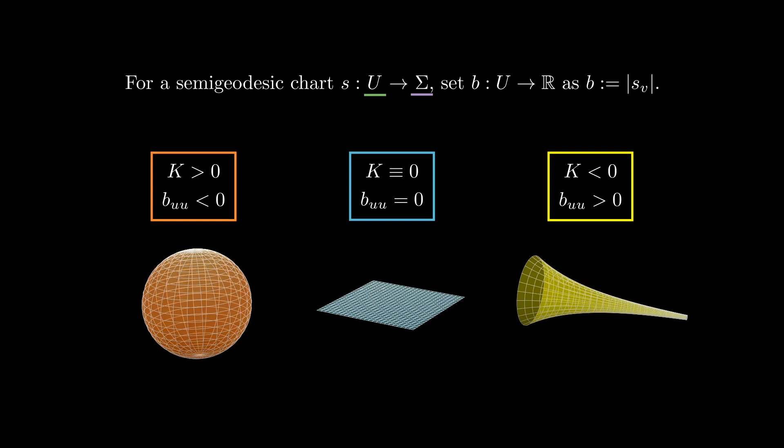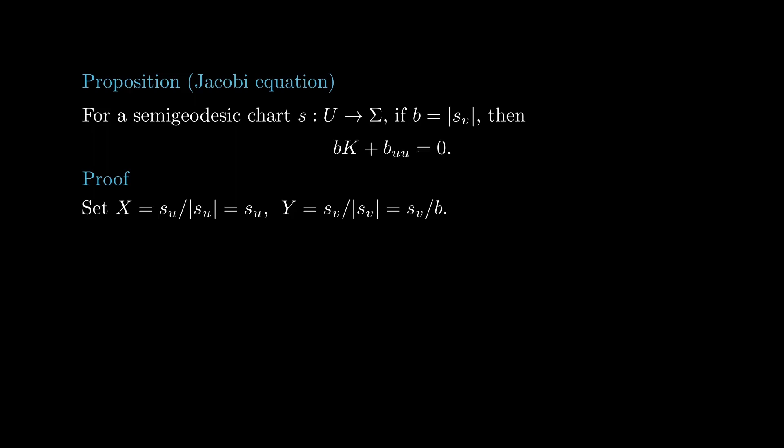This is the content of the following proposition, also known as the Jacobi equation. It gives us an explicit expression for the Gauss curvature in terms of the convexity of B, which encodes how nearby geodesics behave. For the purpose of proving this formula, write uppercase X for the unit vector in the direction as U and uppercase Y for the unit vector in the direction as V. Notice that X actually equals SU, and Y equals SV over B. Let LMMN denote the matrix of the shape operator in the bases X and Y. It is symmetric because XY is an orthonormal basis and the shape operator is self-adjoint.